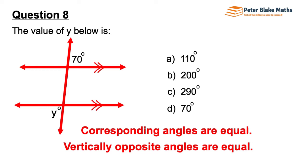There's also a principle that says every acute angle in parallel lines is the same as each other, and every obtuse angle in parallel lines is the same as each other. Y is looking acute, and 70 is certainly an acute angle, so Y equals 70 just from that perspective.